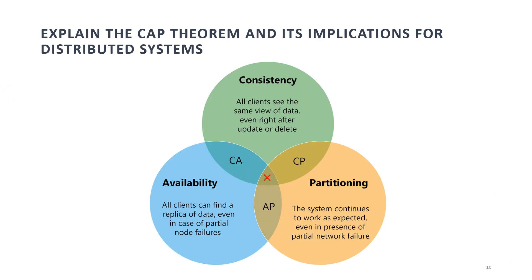Explain the CAP theorem and its implications for distributed systems. The CAP theorem states that in a distributed system it is impossible to simultaneously guarantee consistency, availability, and partition tolerance. Systems typically prioritize two out of three aspects depending on their requirements. Achieving all three properties simultaneously is challenging, so distributed system architects must make trade-offs based on the specific needs of their applications. Understanding the CAP theorem helps data engineers design resilient and scalable distributed systems that meet performance, availability, and fault tolerance requirements.